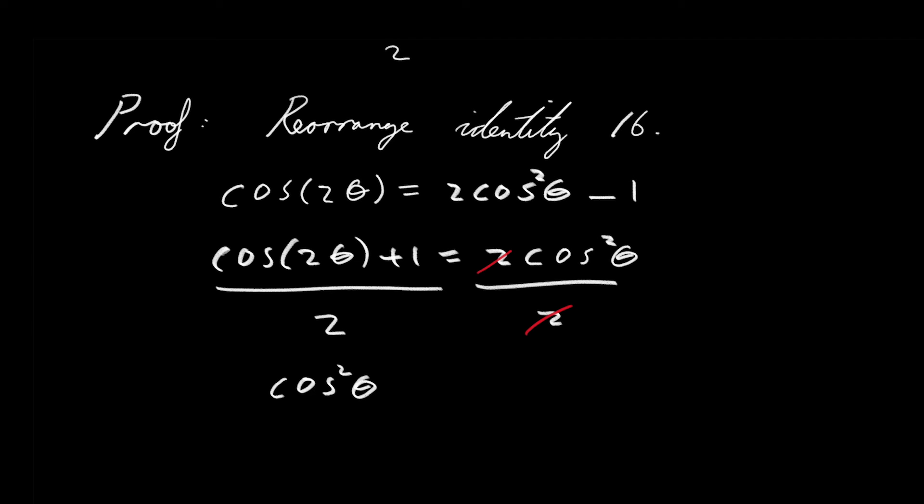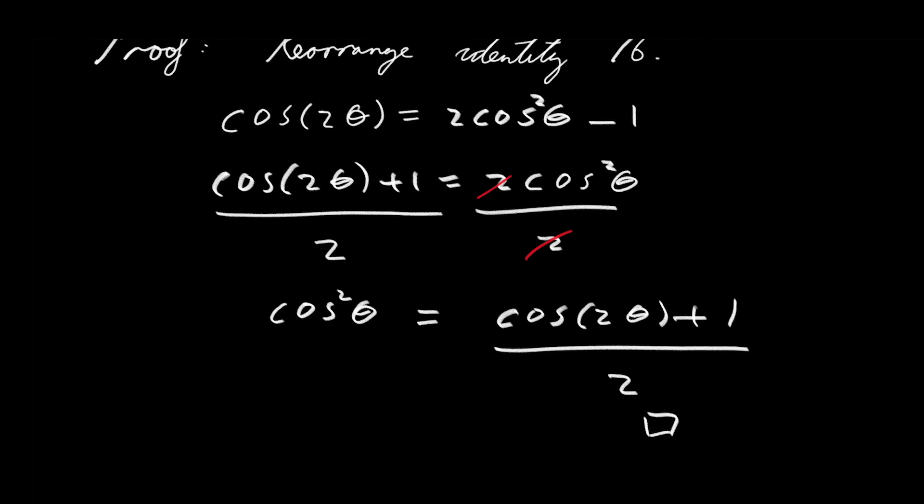And this is the result, that cos²θ = (cos 2θ + 1)/2. And that completes the proof of the other half-angle formula.